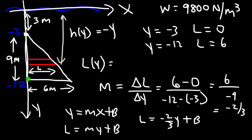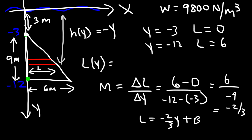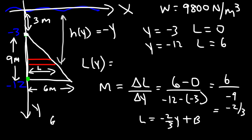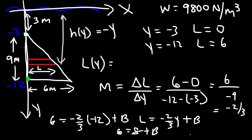Using the point where l is 6 and y is negative 12: negative 2/3 times negative 12 is 8, and 6 minus 8 is negative 2. So b equals negative 2, meaning l(y) = negative 2/3 y minus 2.